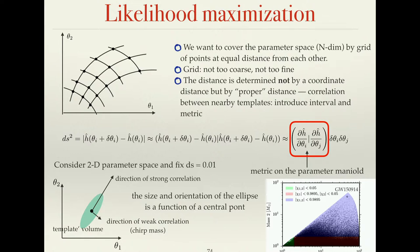There are two principal directions to the ellipse. One is the direction of strong correlation — you need to go quite far in this direction to get an uncorrelated template. The other is the direction of weak correlation — even a small shift will make two waveforms unrecognizable with correlation close to zero. For example, in M1-M2 space such a sensitive parameter is chirp mass, which we measure best.